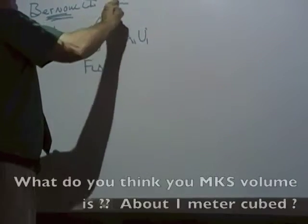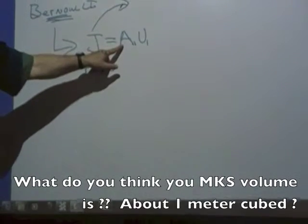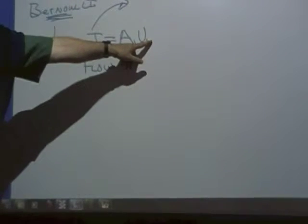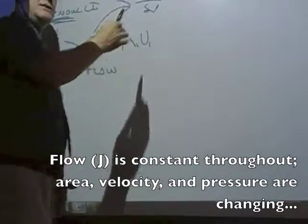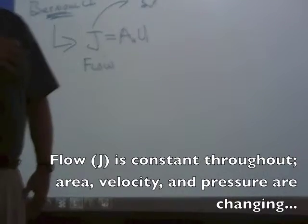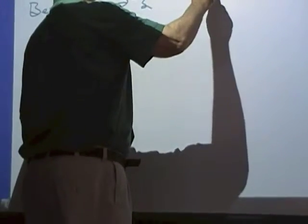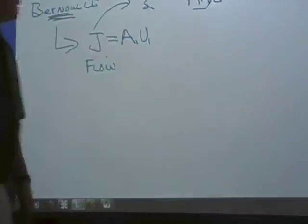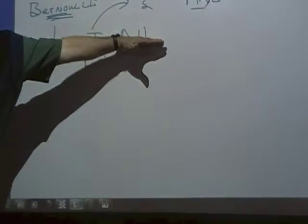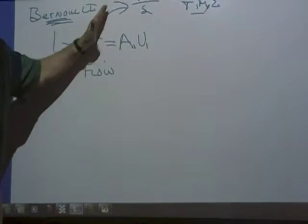And the units of J are? The units of J are meters squared times meters per second, which are meters cubed per second. Which is what over what? Volume over time. So, J is equal to A1V1 is equal to a constant. And it's also equal to volume over time. So, these are the type of problems where we're filling a pool in a certain amount of time.